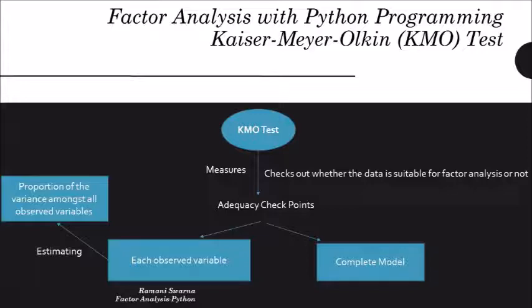Measures for what? To check out whether the data is suitable for factor analysis or not. So that is what the checkpoint is for me. The adequacy checkpoints are: we will be observing each and every variable, number one. Number two, we even need to check the complete model that is present.